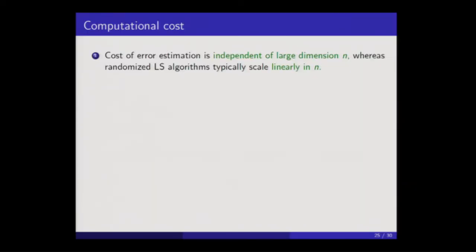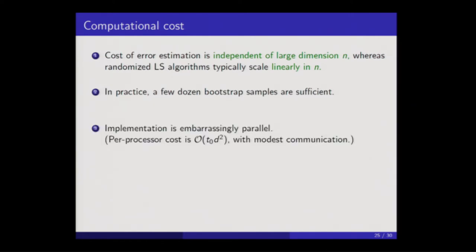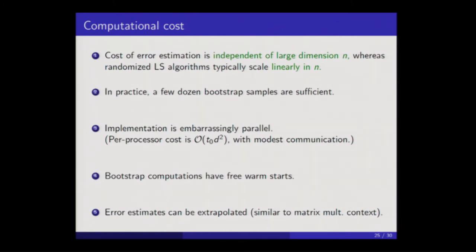Regarding computational cost: the cost of the bootstrap is independent of the large dimension n because it never needs to touch the full inputs. In practice, the number of bootstrap samples can be taken to be a few dozen. You can make use of the fact that the bootstrap is embarrassingly parallel. An extra benefit in the least squares case is that you get free warm starts for the bootstrap computations — your original sketch serves as a warm start whenever you're solving the bootstrap version of the least squares problem. You can again use extrapolation; the form of the extrapolation rule is different for IHS, but it is also successful in practice.